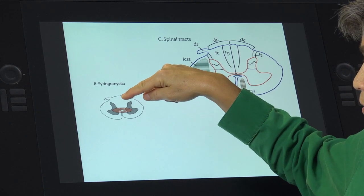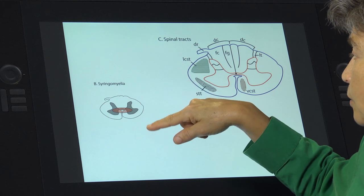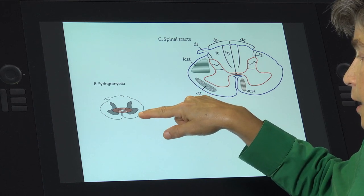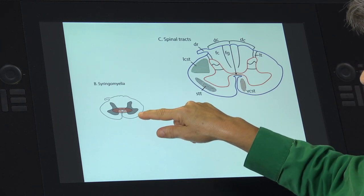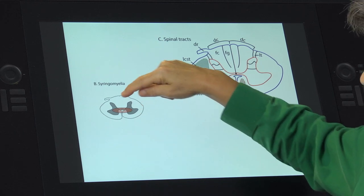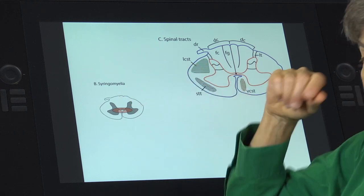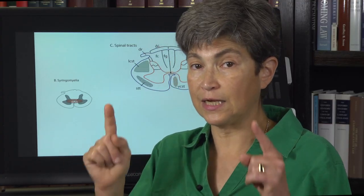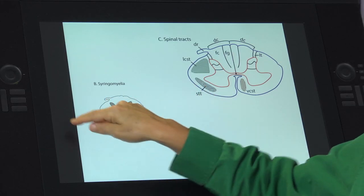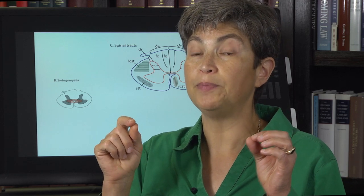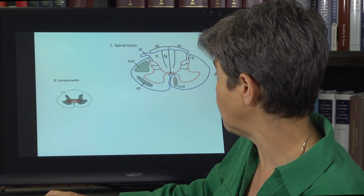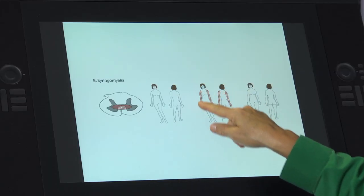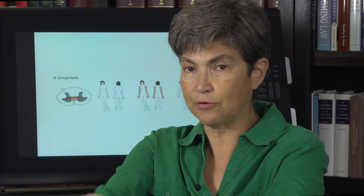What will be affected? Will light touch, vibration, and proprioception be affected? No. Will voluntary movement be affected? No. Will pain and temperature be affected? You might think no — pain and temperature is traveling here, voluntary movement here, light touch vibration and proprioception up here. But there is one thing that will be affected: the pain and temperature pathway at the level of this segment. Those crossing fibers are going to be lesioned by the syrinx, so what you get is a bilateral loss of pain and temperature.